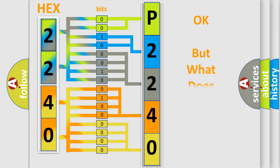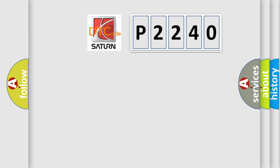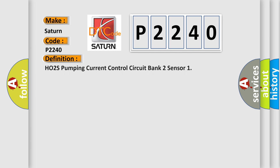We now know in what way the diagnostic tool translates the received information into a more comprehensible format. The number itself does not make sense to us if we cannot assign information about what it actually expresses. So, what does the diagnostic trouble code P2240 interpret specifically for Saturn car manufacturers? The basic definition is: HO2S Pumping Current Control Circuit Bank 2 Sensor.